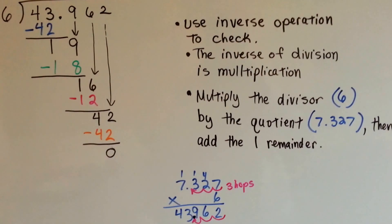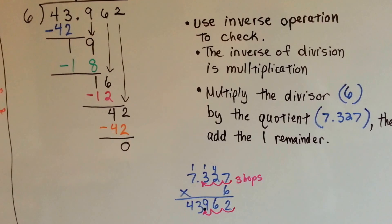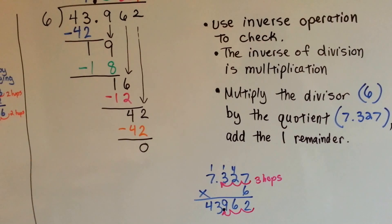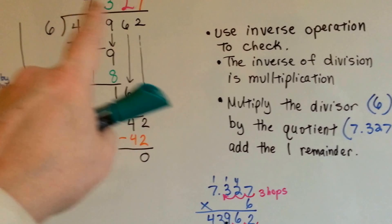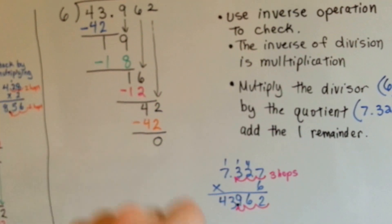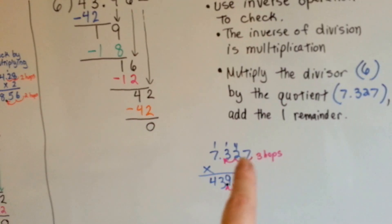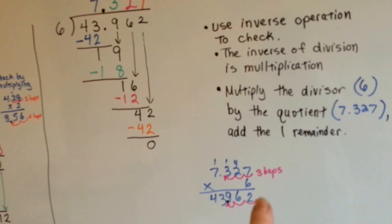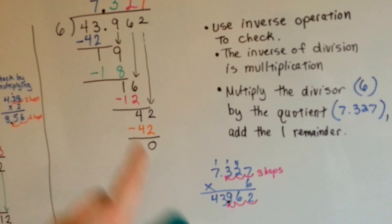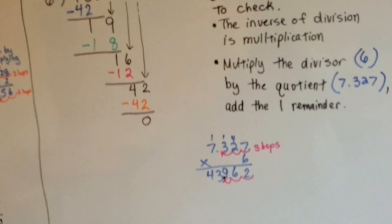And then, of course, to check, we use inverse operation, because the inverse of division is multiplication. And we multiply the quotient by the divisor. And we count how many hops are over in the quotient. And that's how many are going to be in the product. And if they match, we know we did them correctly.